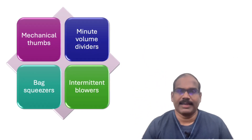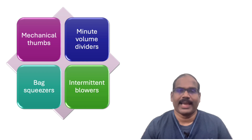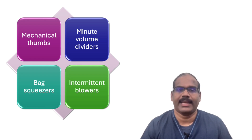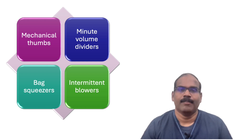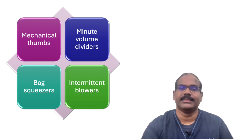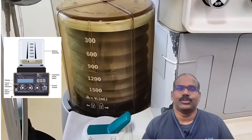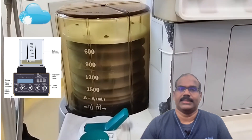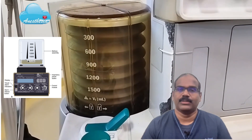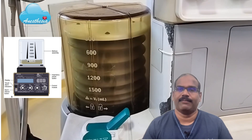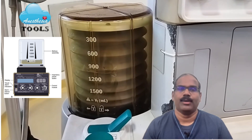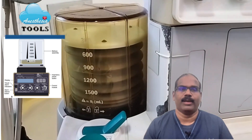Several methods of classification of ventilators exist. According to the mechanism of action, ventilators can be classified as mechanical thumbs, minute volume dividers, bag squeezers, and intermittent blowers. Moving into more contemporary anesthesia ventilators, based on the drive mechanism, we can classify them into bellows type and non-bellows type.